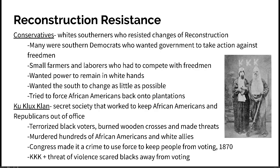The KKK murdered hundreds of African Americans and white allies through lynching — killing someone before they had been arrested or tried, violating the 14th Amendment's due process protections. The KKK continued to use violence and scare tactics to keep African Americans from voting, even after Congress made it a crime to use force to prevent people from voting in 1870.